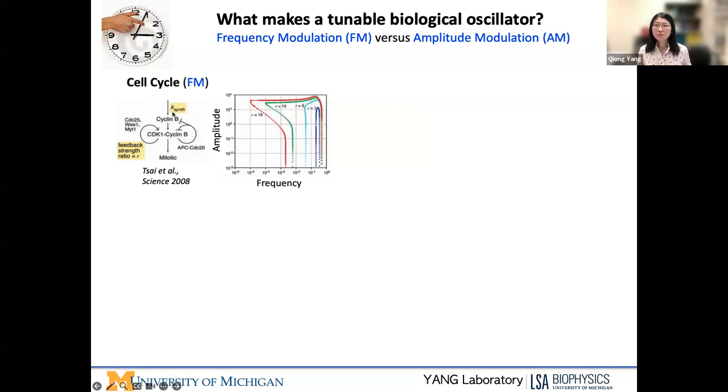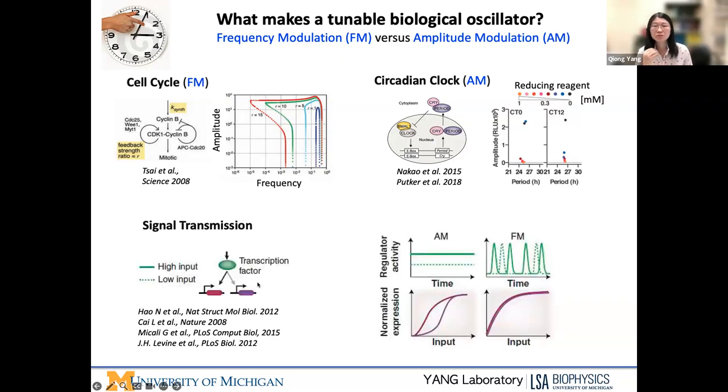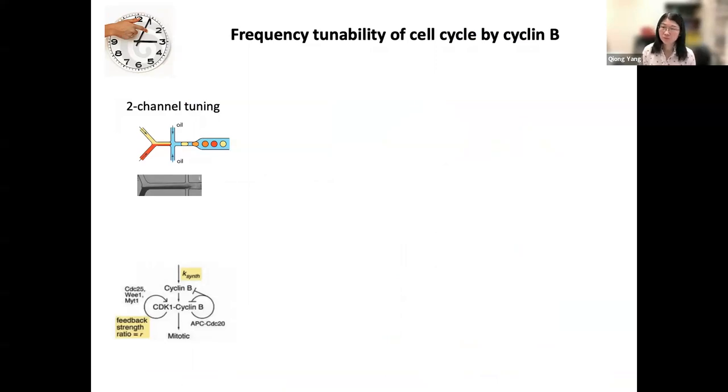The first thing we want to understand is related to frequency modulation that I introduced at the beginning. In theory, there has been prediction that cell cycle can be tuned by just changing the synthesis rate of cyclin B, which is the input of the clock. This shows that the period can be tuned in a wide range, but amplitude is maintained at a certain level, showing cell cycle is frequency modulated. However, circadian clock has been shown to be amplitude modulated. In signaling transduction pathways, there has been both amplitude and frequency modulation discussed. We want to use our experimental system to test if the cell cycle, the CDK-1 mitotic circuit, is frequency modulated by cyclin B.